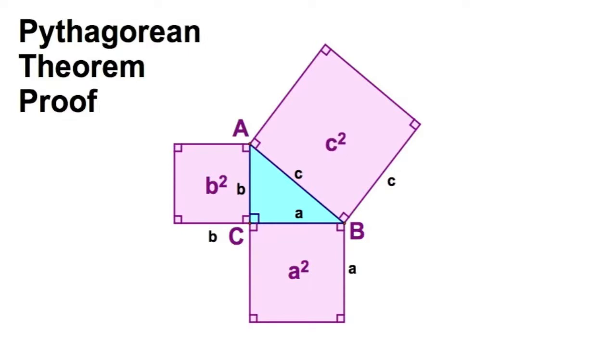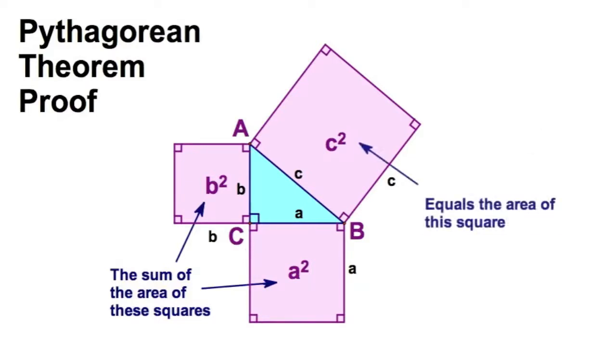Now you've seen that before, and we did it as a sketchpad lab where we measured. And when we measured, this is what we found: we add up these two areas and they're going to equal that, and hence A squared plus B squared equals C squared.